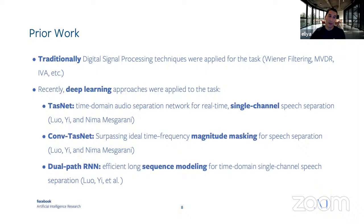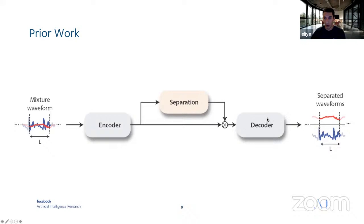All of these networks share a common form. At the input is the mixture waveform. There is an encoder, which is a convolutional layer, and then a separation network that outputs a mask. The mask is applied to the output of the encoder, and then the result is passed through a decoder to get the separated waveforms.